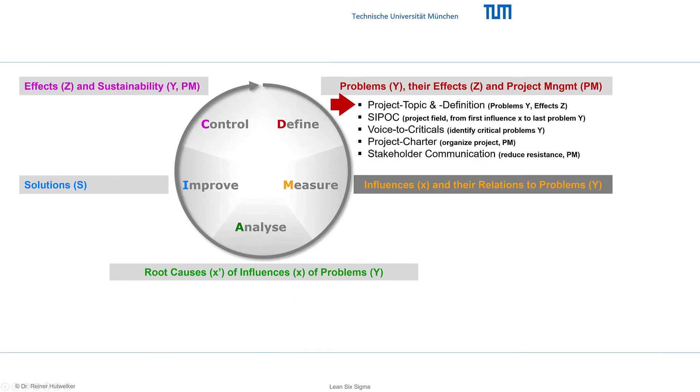In the define phase we define the problems of the output and their effects, for example the financial potential. In this phase we typically decide on the implementation of the project and organize the project.